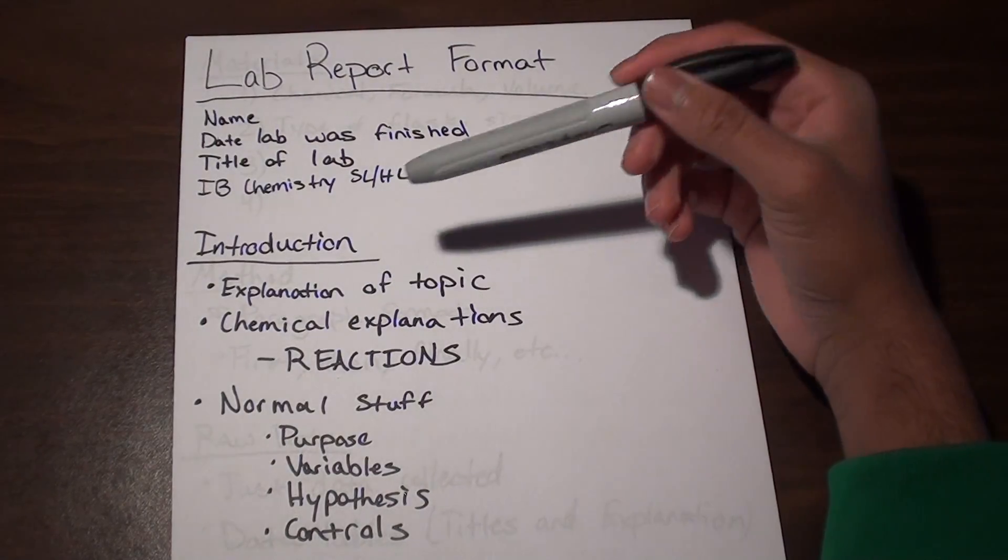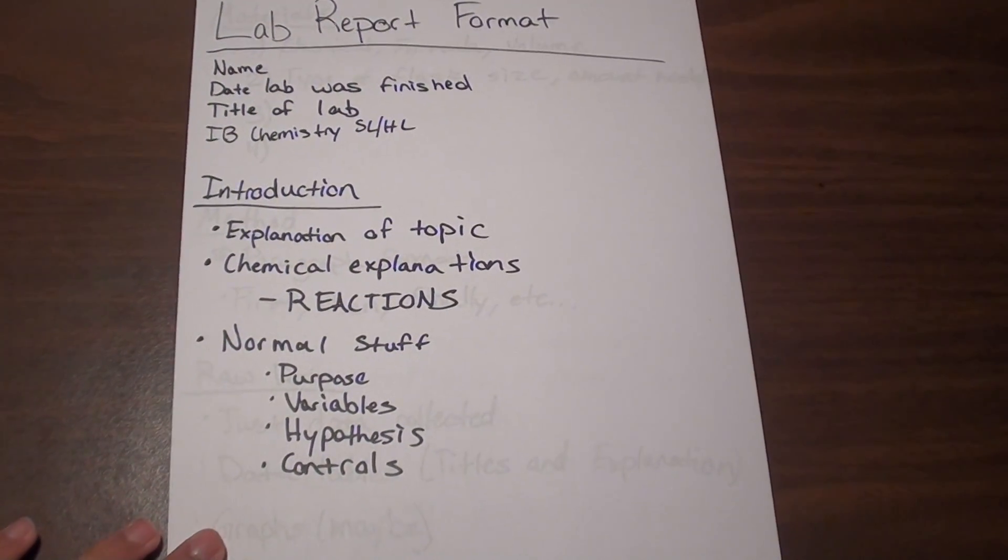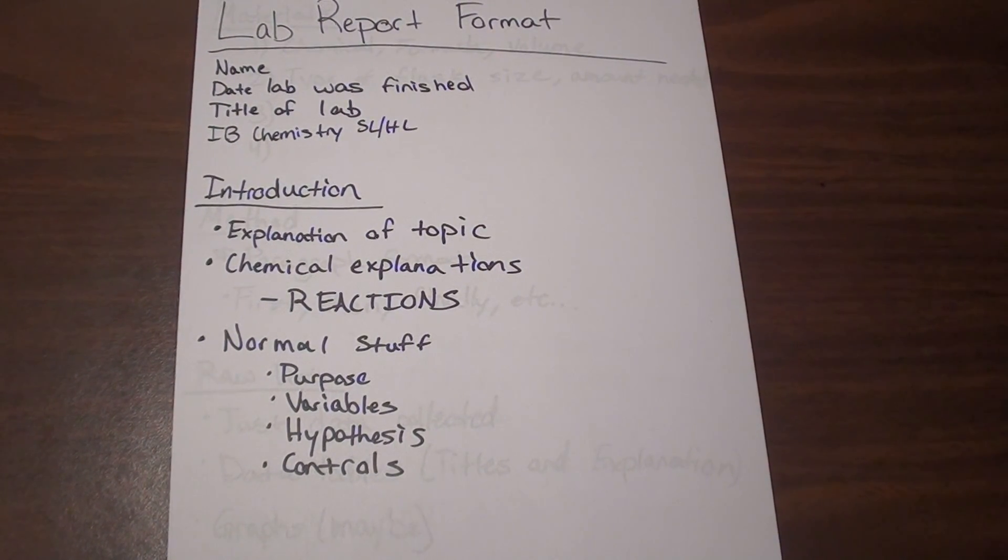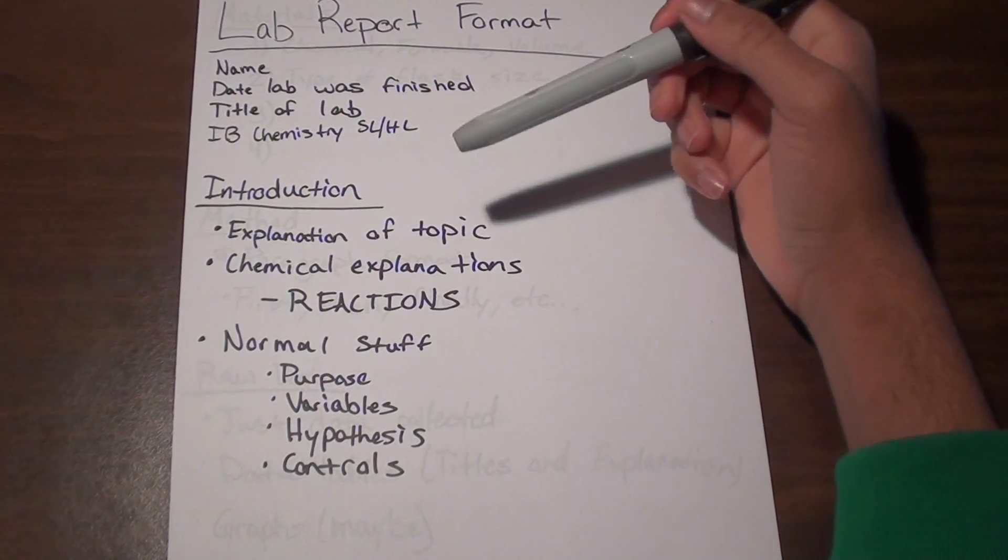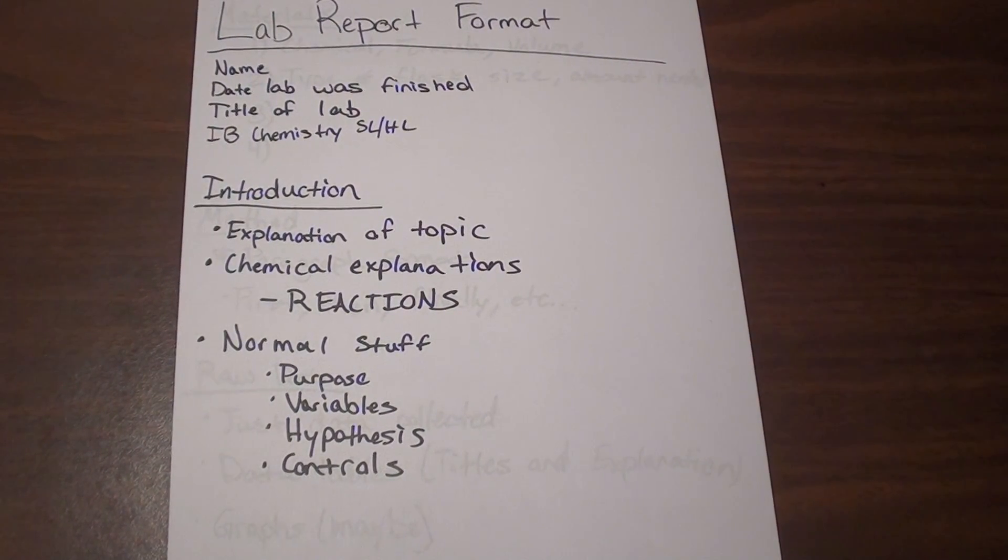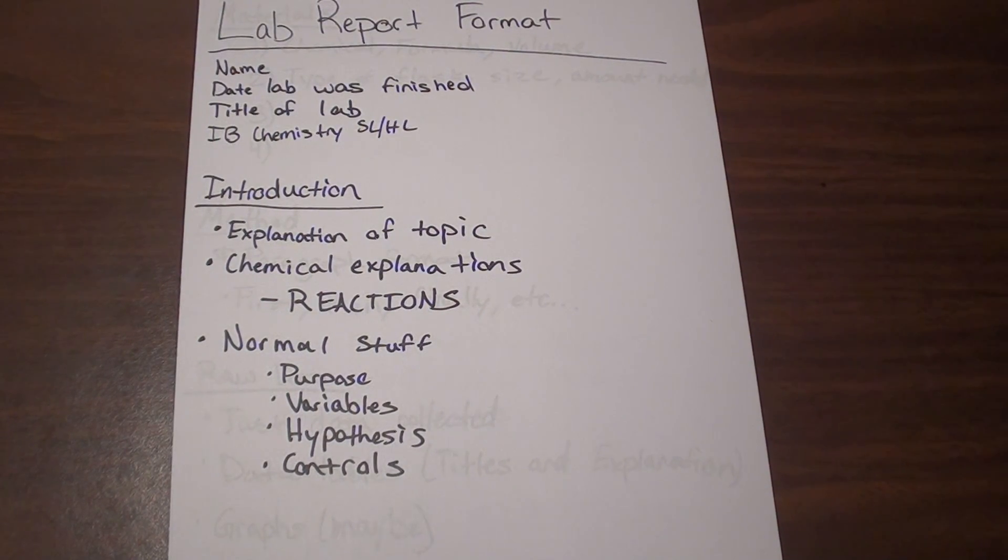So after the heading, obviously the first thing you're going to want is the introduction, and this seems pretty straightforward. It's kind of, in junior year, if you guys had junior year biology, which I'm sure most of you guys had, the introduction is kind of like the background and the introduction in biology all combined and a lot more brief. You want an explanation of the topic, which is really going to be no more than maybe one paragraph in which you're kind of explaining the basis around what the lab is about.